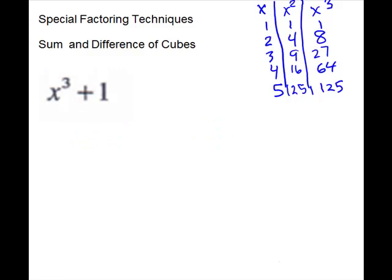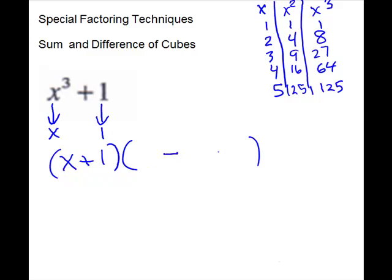Next we have x cubed plus one. So we do have two terms, we have an exponent of three, so we're going to try cubes. Cube root of x cubed would be just x. Cube root of one is one. Use those pieces with the sign of the problem: x plus one. Second set will be a trinomial. For your signs: the first one will be the opposite of that — so if that's plus, this has to be minus. Last one is always plus. Then your combination of your roots: first root times itself — x times x is x squared. First root times the second one — x times one is just x. And the last root times itself — one times one is one.